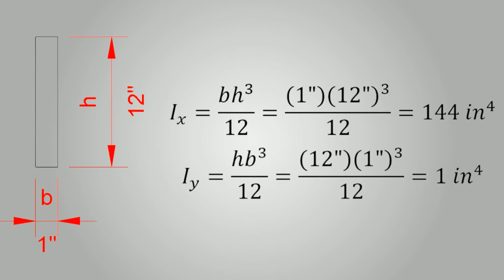For example, let's assume we have a section that is 1 inch wide and 12 inch high. We will find out that IY is 1 inch to the 4th and IX is 144 inch to the 4th, which means that the section is 144 times stronger about the X direction than it is about the Y direction.